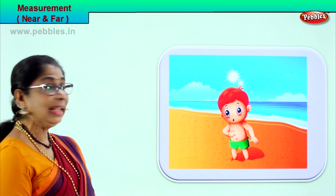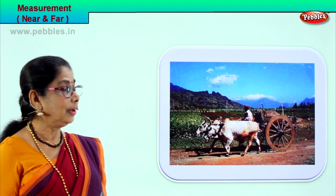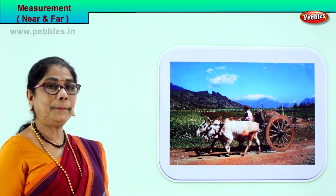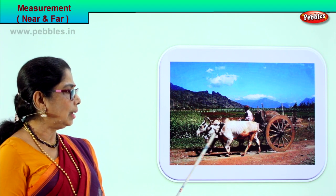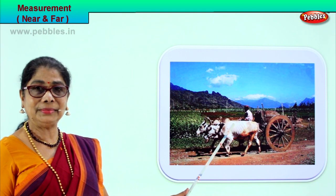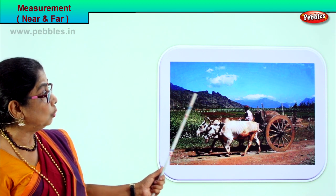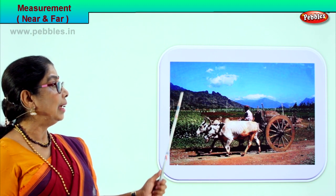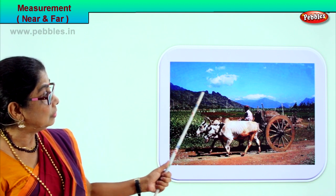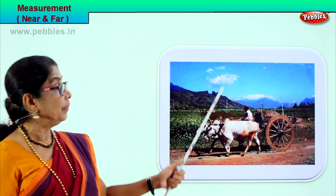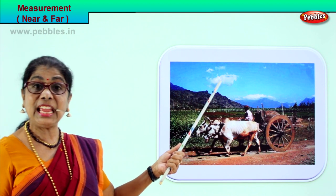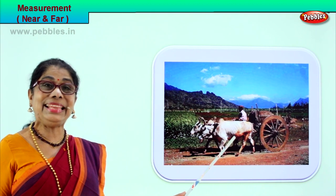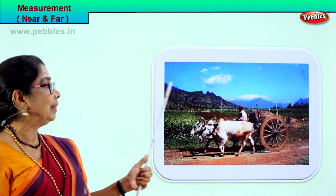Look at this lovely picture — a bullock cart passing by. The bullock cart is close to you, near. But can you see far away? There is a beautiful field and chains of mountains far away, and clouds up in the sky far away. The bullock cart is near, the chains of mountains are far away. You are learning two measurements — near and far.